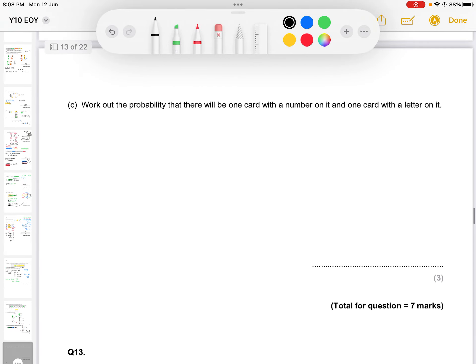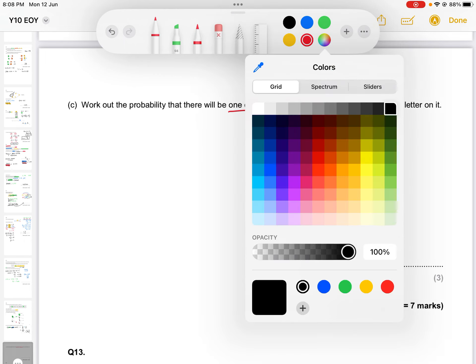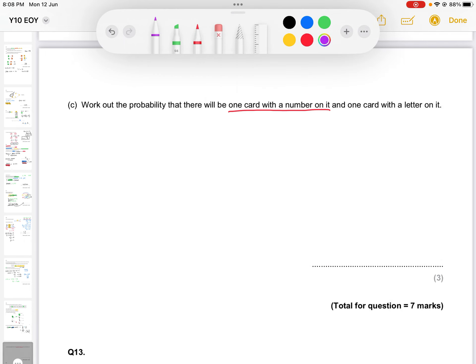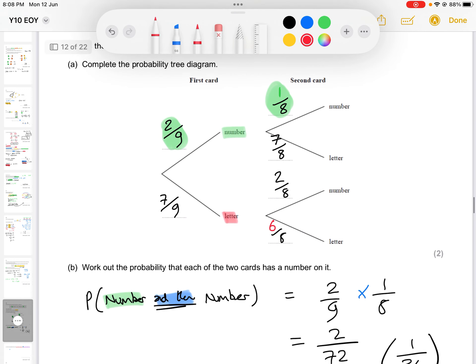Part C, work out the probability that there will be one card with a number on it and one card with a letter on it. So you have this and again, so you're going to have multiplying going on when we look at the situation of having a number on it and having a letter two separate times. What we have to be careful of here is that there are two ways of getting this number and a letter. So there's two options here.